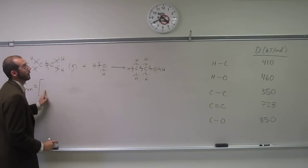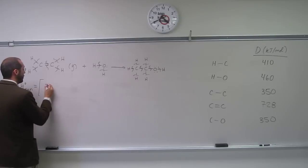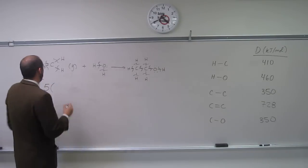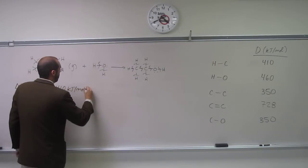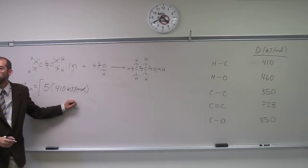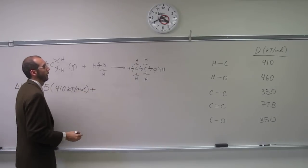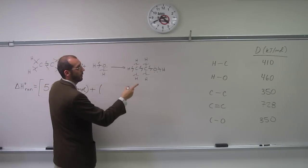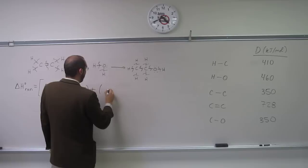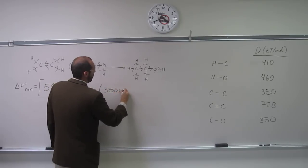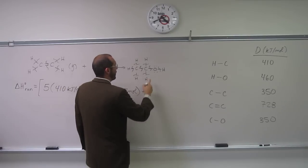What do we say? One, two, three, four, five CH bonds. So five times 410 kilojoules per mole. Does that make sense? And what would be next? The CC bond. Okay, 350. Sorry, I just didn't hear what you said.